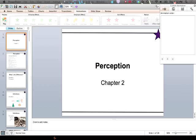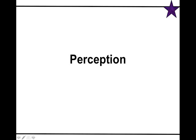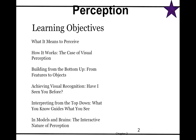We're going to move on to perception and talk about how we create reality from all the sensations around us. What are the ways that we have this mental picture of what's going on in the world? We're going to look at how sensation and perception are different. We'll talk about what it means to perceive things, visual perception, bottom-up processing, visual recognition, and top-down processing.